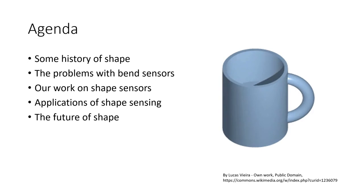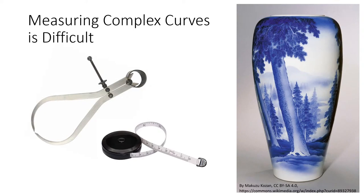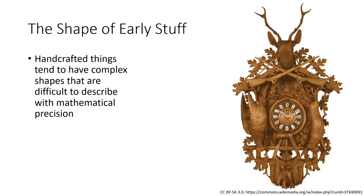Let's start with a simple example: if I gave you a vase and asked you to measure its shape precisely so someone remotely could reproduce it exactly — that's actually a pretty hard task. Traditional tools like tape measures and calipers measure linear distances but not curvature. When things were mostly handmade, shape wasn't well defined. A cuckoo clock from around 1900 would be extremely hard to measure mathematically with those tools — there's no mathematical precision for something like that.